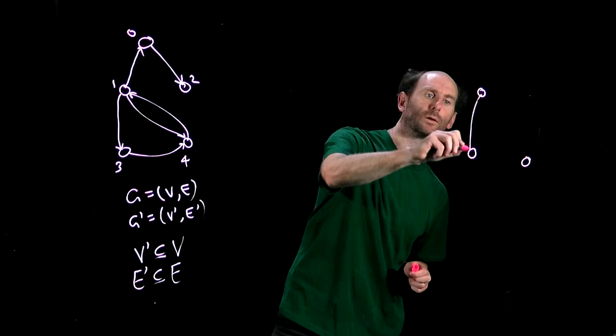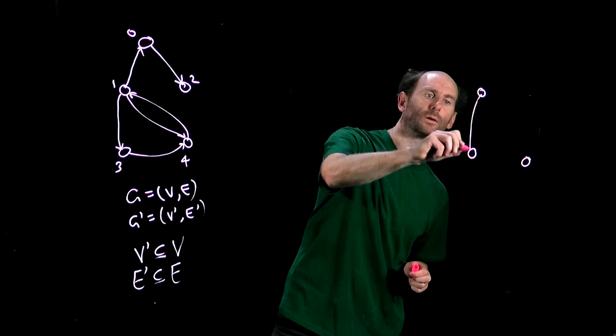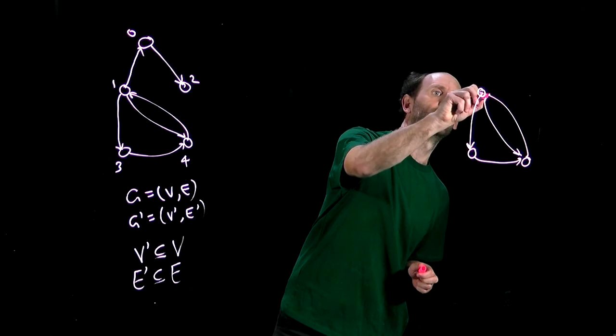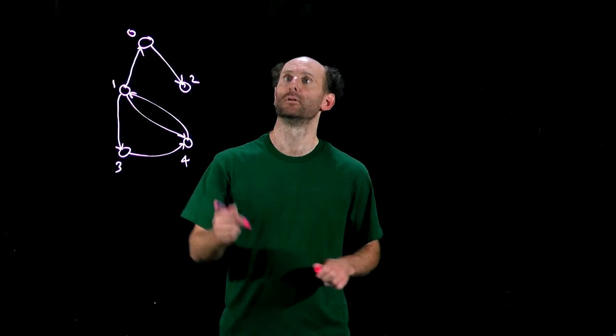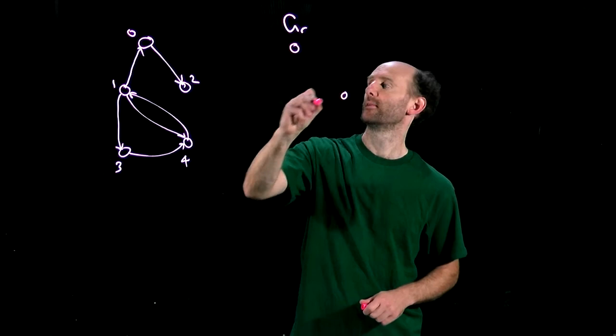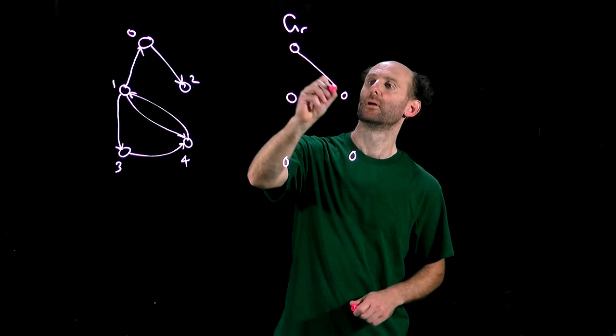The reverse digraph is one where we just change the direction of all the arrows. We denote it G subscript r. Let's look at an example. It has exactly the same node set except the arcs are reversed. So that one's reversed, that one's reversed and so on. Here's the reverse graph.